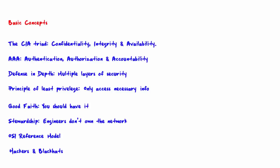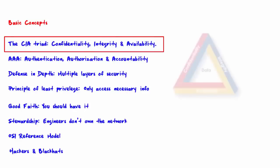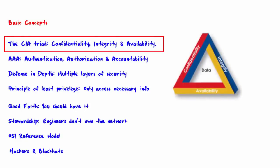Welcome to the video on basic concepts. Before we get to step one, we need to understand a few basic concepts of network security. This will give you the necessary background to tackle the 12 steps. The first concept is the CIA triad — one of the most basic principles of information security. CIA stands for confidentiality, integrity, and availability.